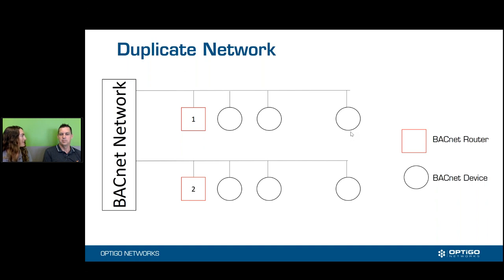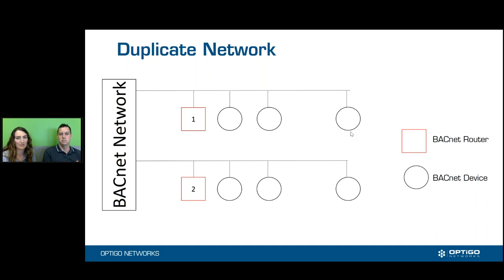Anything else we need to know about duplicate networks? I think that pretty much covers it. If there's anything you want to know, you can put questions in the question box and we're happy to answer them. Hopefully that means you understand exactly how a duplicate network happens and you're ready to go fix any that you have — although hopefully none of you have duplicate networks. As always, feel free to use Visual BACnet to find those duplicate networks. It can do it very fast if you have some devices that are offline and you're not sure what's going on. Have a good day. Thank you. Bye.